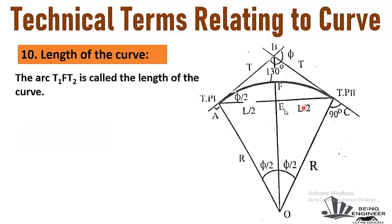The tenth term is length of the curve. The arc T1FT2 is called the length of the curve — that is the curve starting from T1 and ending at tangent point T2. This length of the arc is called the length of the curve.